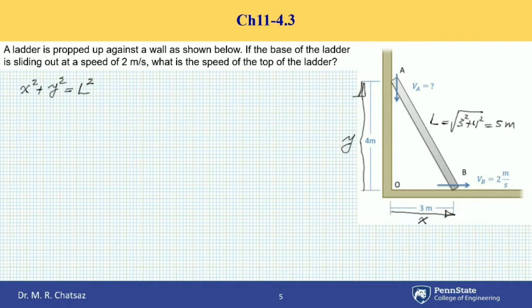If you take a time derivative of both sides of this equation, we have 2X·X-dot plus 2Y·Y-dot equal to, since the length L is constant, this is equal to 0.